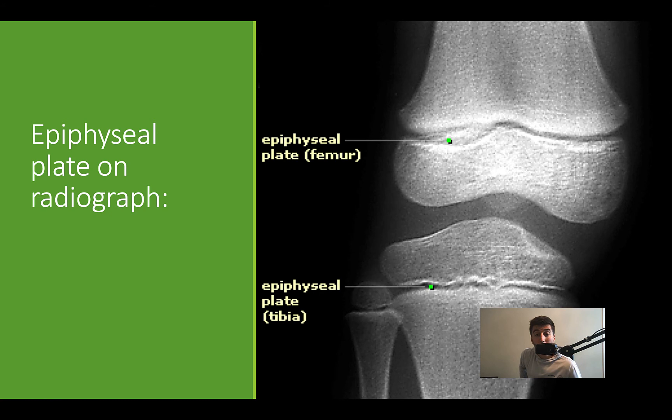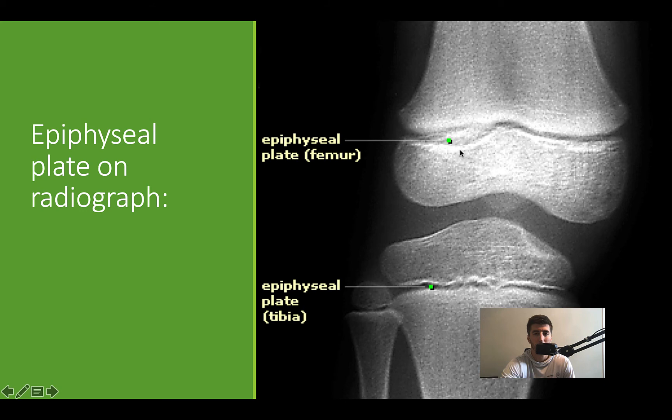Here's a really clear radiograph showing the epiphyseal plate — literally the section between the epiphysis and the diaphysis. As an individual ages out of adolescence, this section begins to close, and will completely close when they're done growing.